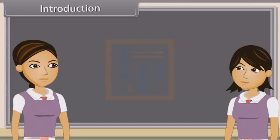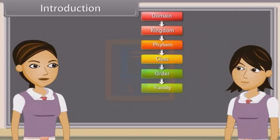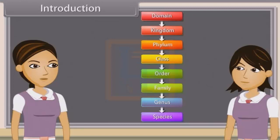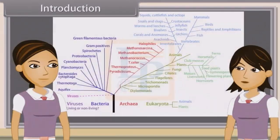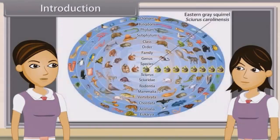Biological classification, or scientific classification in biology, is a method by which biologists group and categorize organisms by biological type, such as genus or species. Modern biological classification has its root in the work of Carolus Linnaeus, who grouped species according to shared physical characteristics. These groupings have since been revised to improve consistency with the Darwinian principle of common descent.